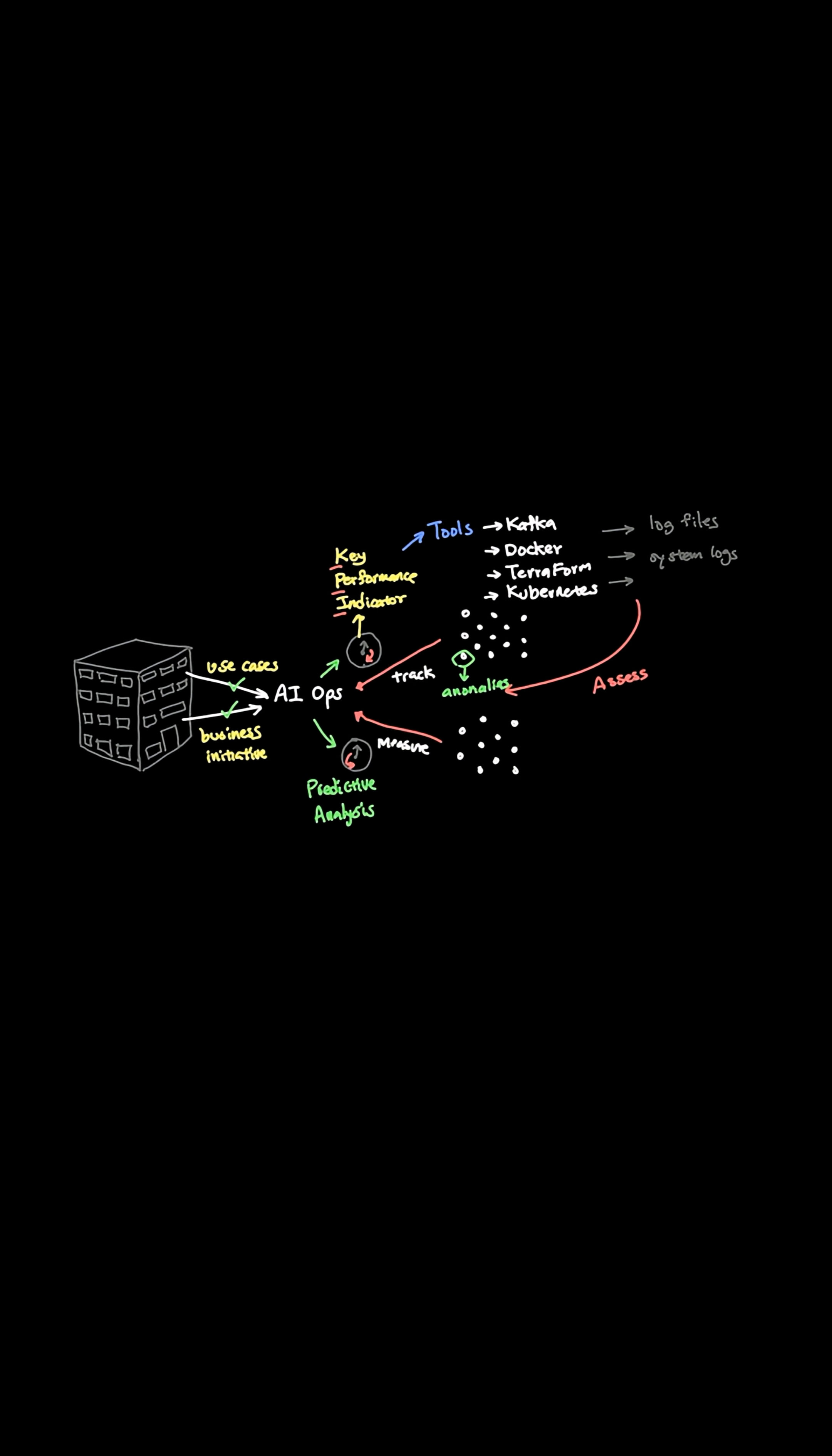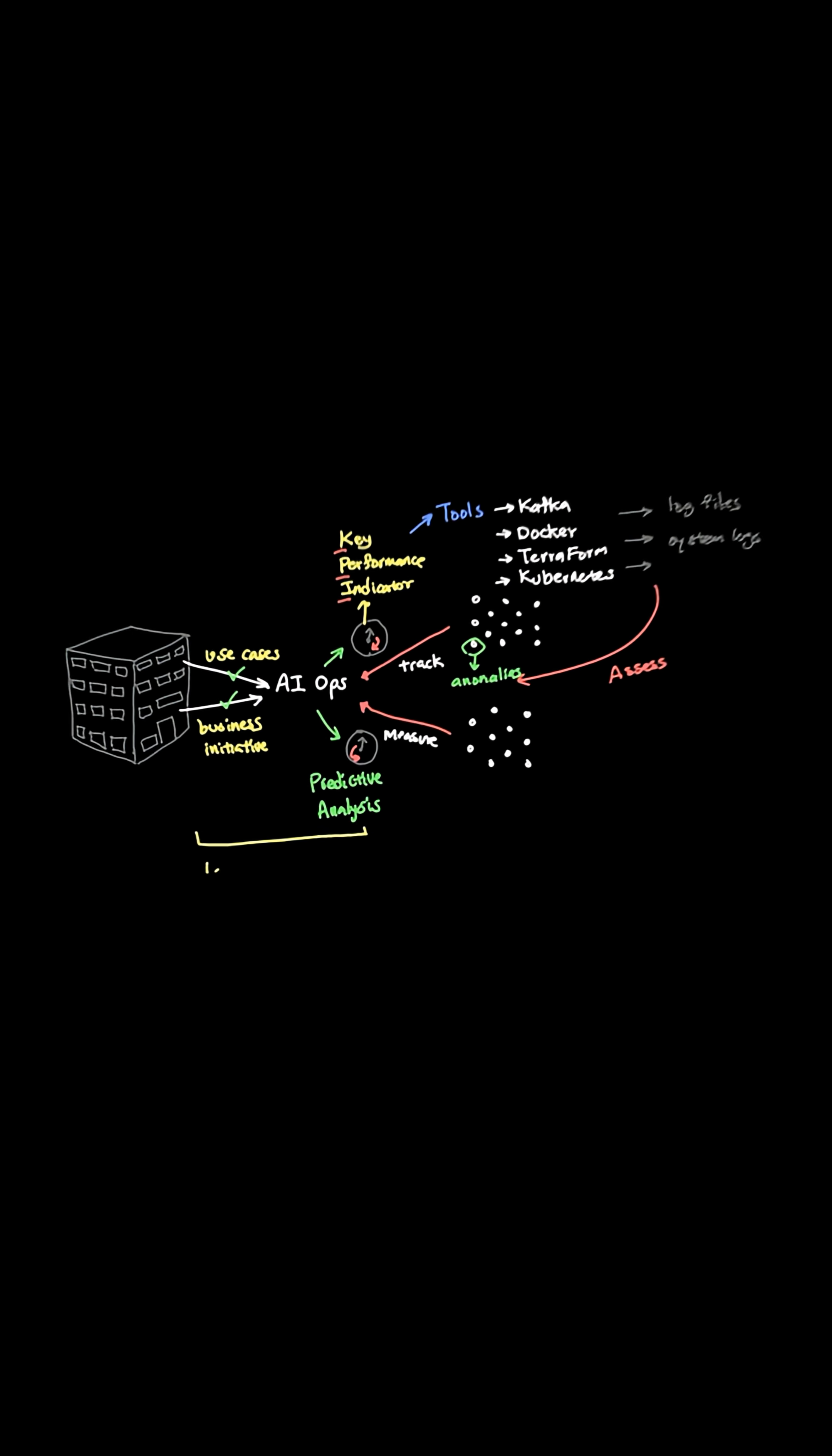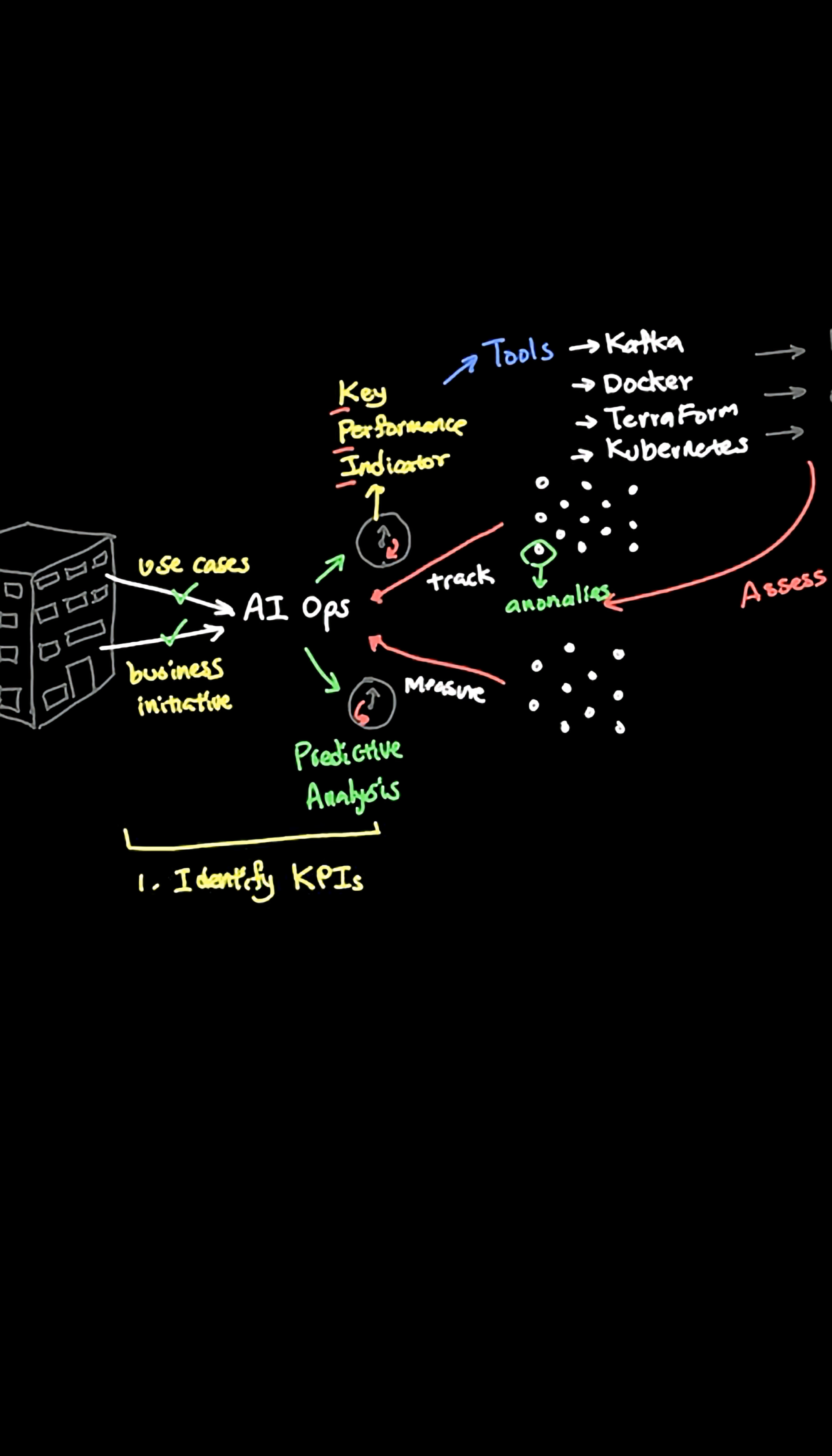Now that you have the baseline of what a healthy system looks like in the previous two steps, where we first identify KPIs based on business initiatives and second, found tools to measure them, we can now build a system around this.